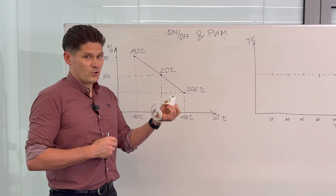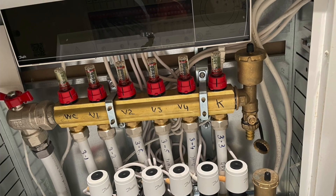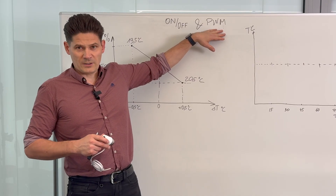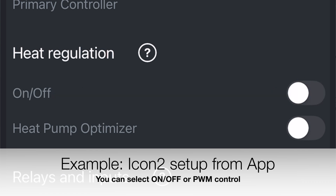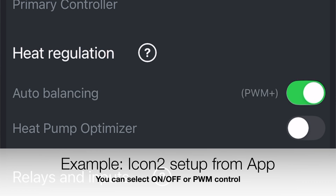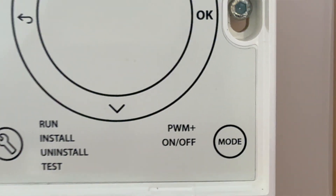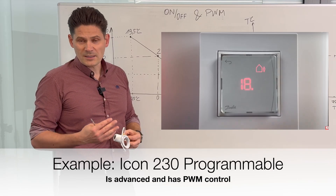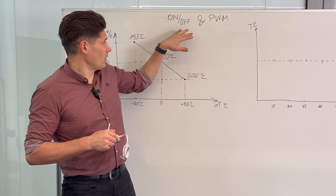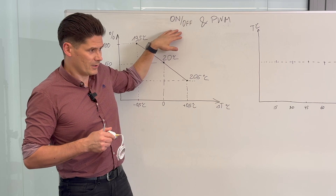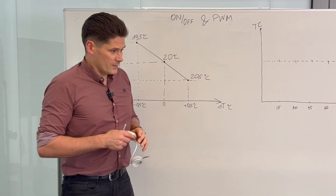These wax-filled on/off actuators can be controlled from a room thermostat or from automatics using an on/off signal or pulse width modulation signal. For example, the Icon 2 or Icon 1 system can work with on/off signal or PWM signal. More advanced thermostats usually have PWM control, while simpler thermostats are only on/off.